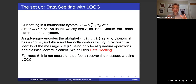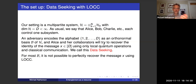In the setup is our usual LOCC setup. We have a multi-partite system, finite-dimensional, and as usual, we associate each subsystem with someone — a different agent: Alice, Bob, Charlie, you name it. In this case, we assume that an adversary encodes a complete alphabet of size D as an orthonormal basis of our Hilbert space H, and it's up to Alice and her collaborators to try to recover the identity of the state using only local quantum operations and classical communication. We call this data-seeking, because it's essentially the data-hiding problem, but we're looking at it from the perspective of the people trying to decode the information. For most bases, it's not possible to perfectly recover the message H_X just using LOCC.